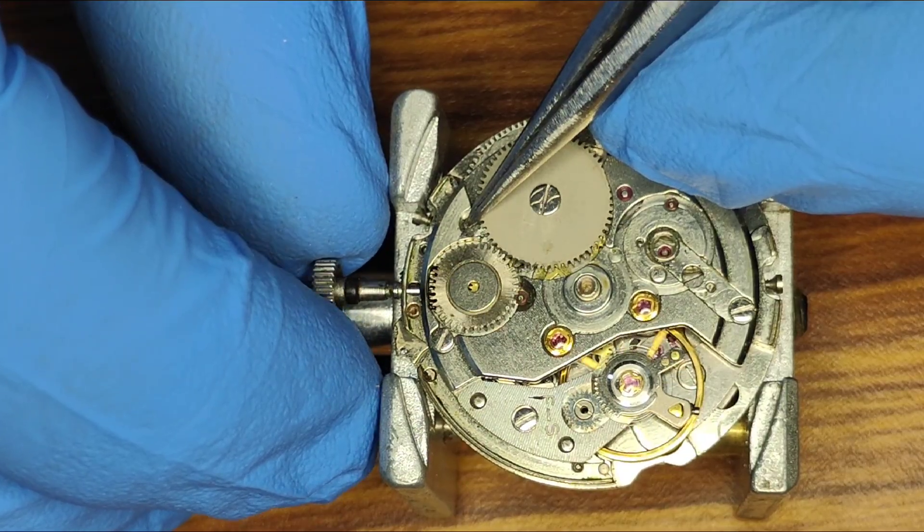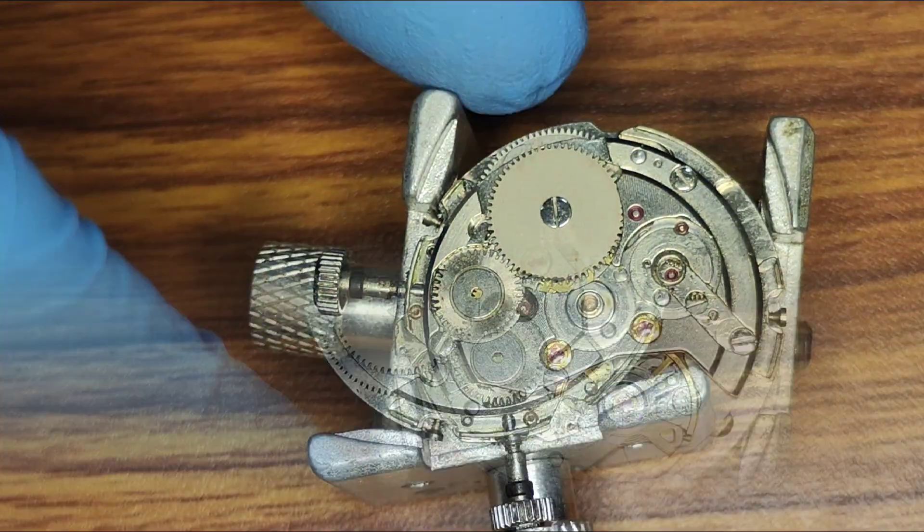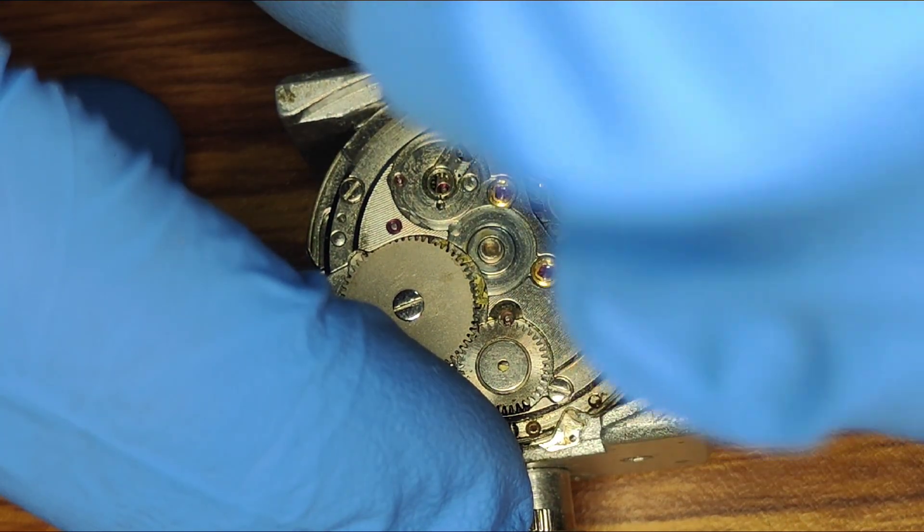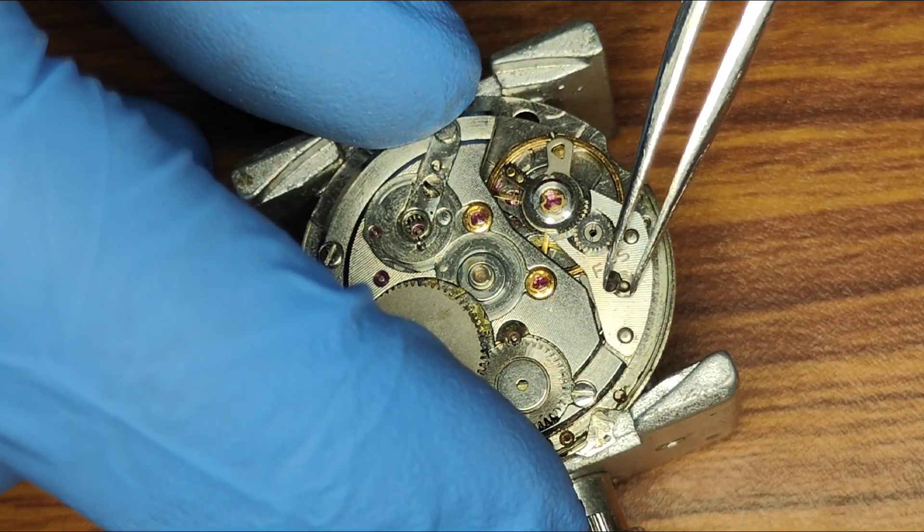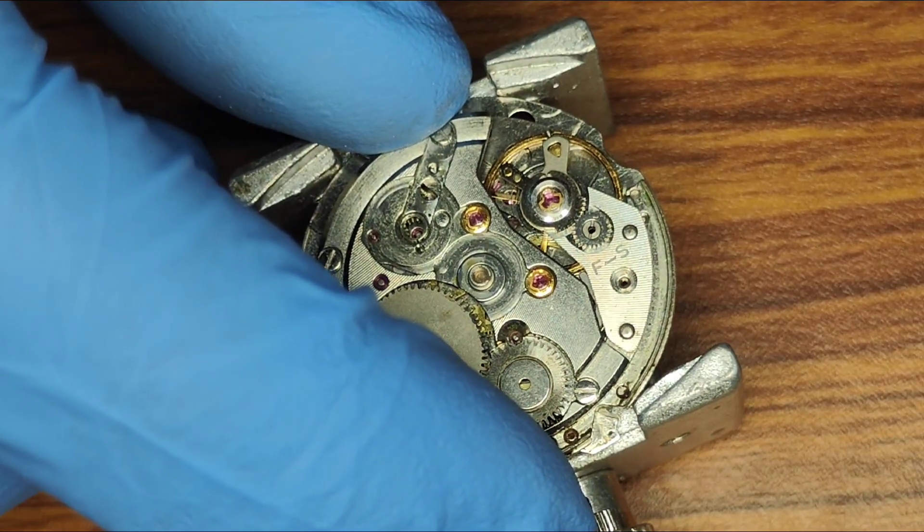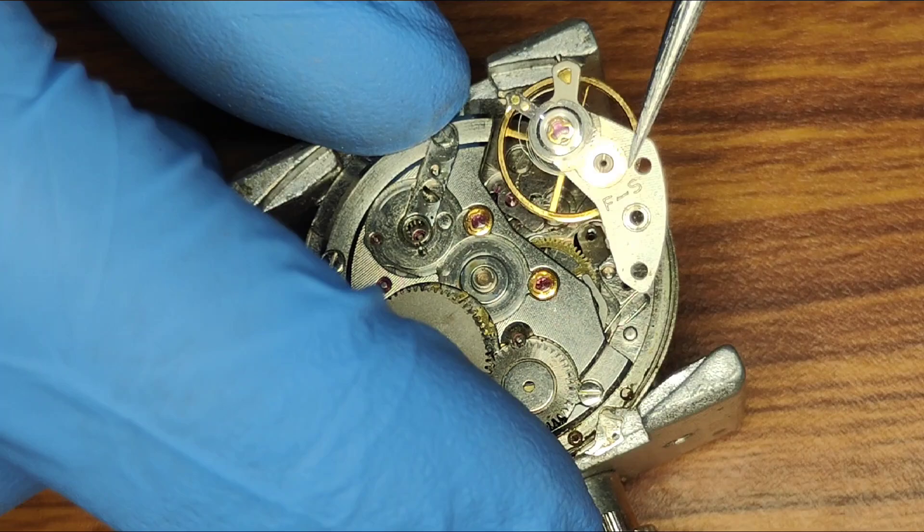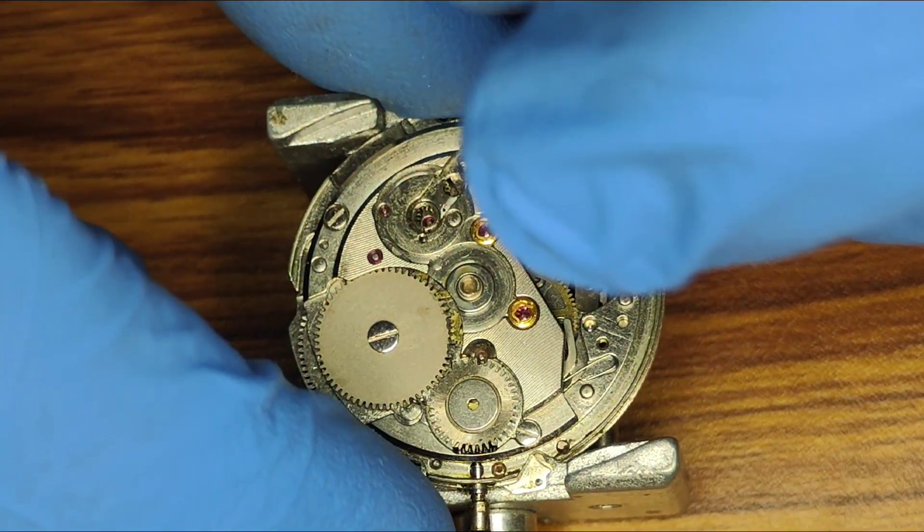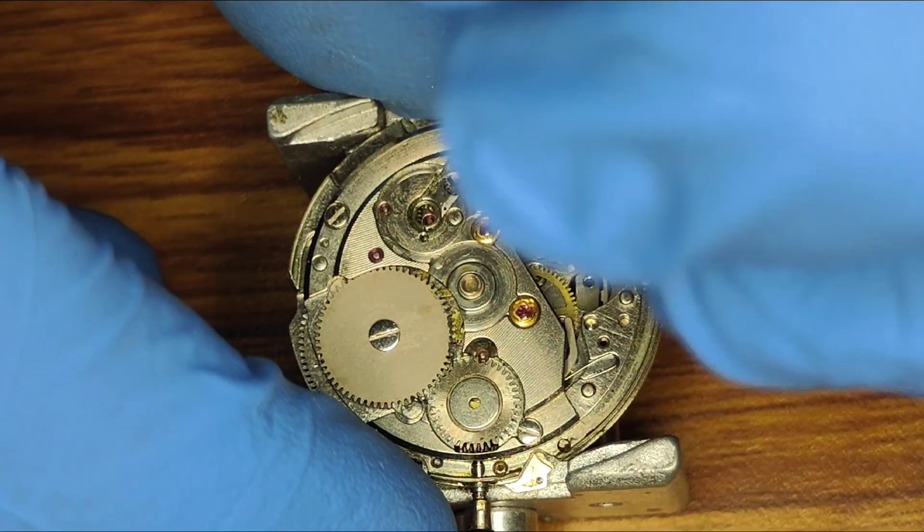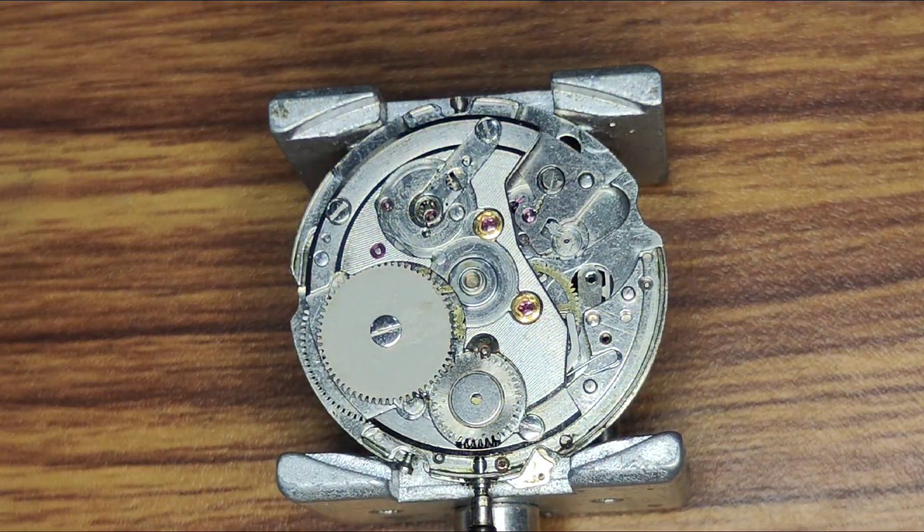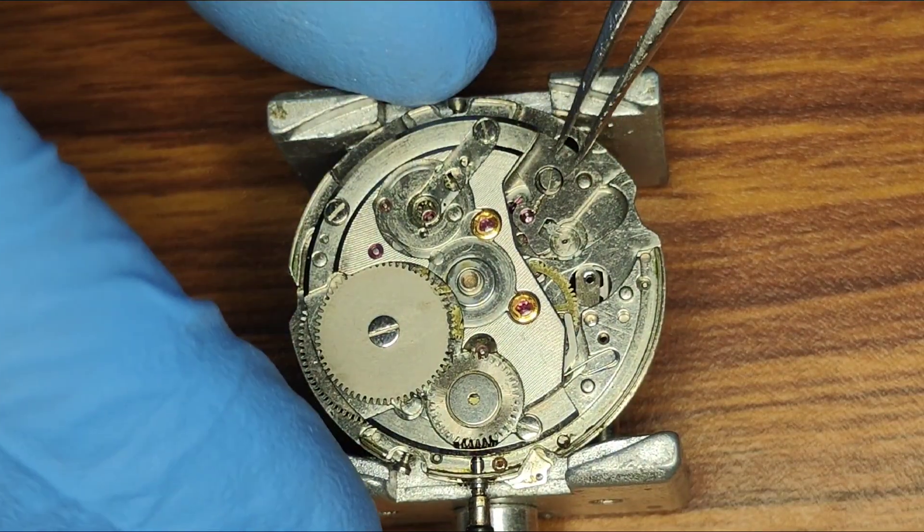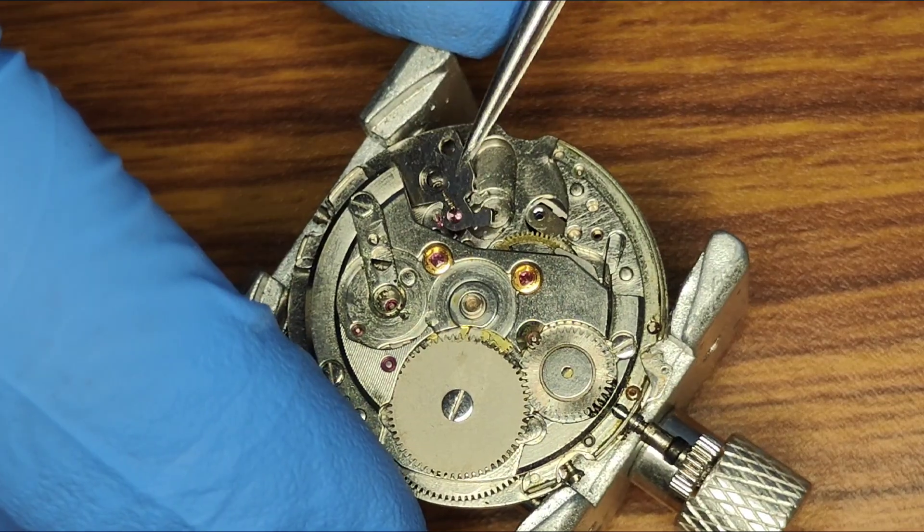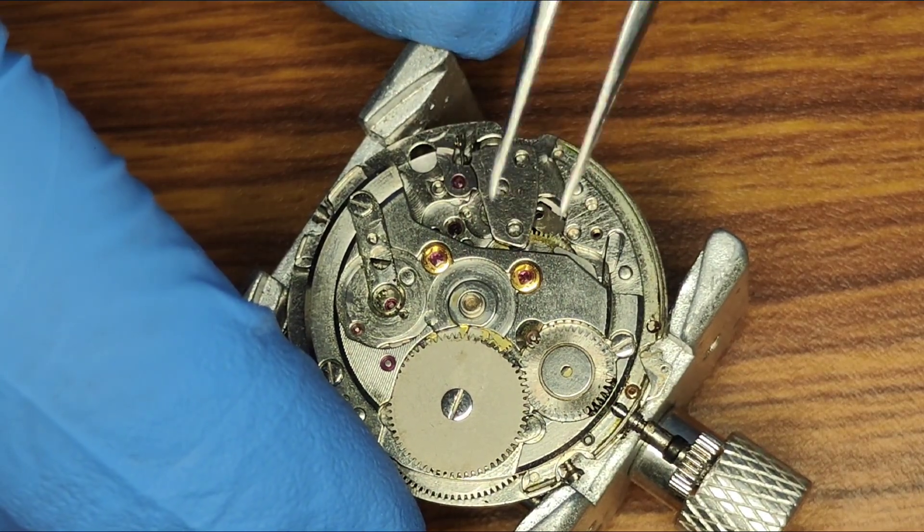Once the mainspring is unwound, we can remove the balance bridge and pallet fork.